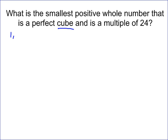1 is a perfect cube. 8 is a perfect cube, 2 times 2 times 2, or 2 cubed. 27 is a perfect cube, 3 times 3 times 3. 64 is a perfect cube. 125 is a perfect cube. 216 is a perfect cube, that's 6 cubed. These are all perfect cubes.